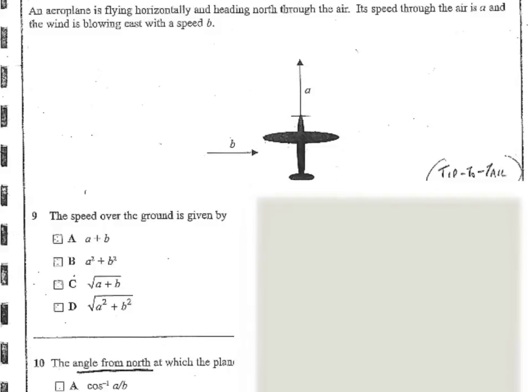Question 9. An airplane is flying horizontally and heading north through the air. Its speed through the air is A and the wind is blowing east with a speed B. So one of these expressions is the speed over the ground. So we've got the airplane moving north through the air while the air moves sideways. So these vectors are going to combine to produce some diagonal motion over the land. And that's what we have to establish.